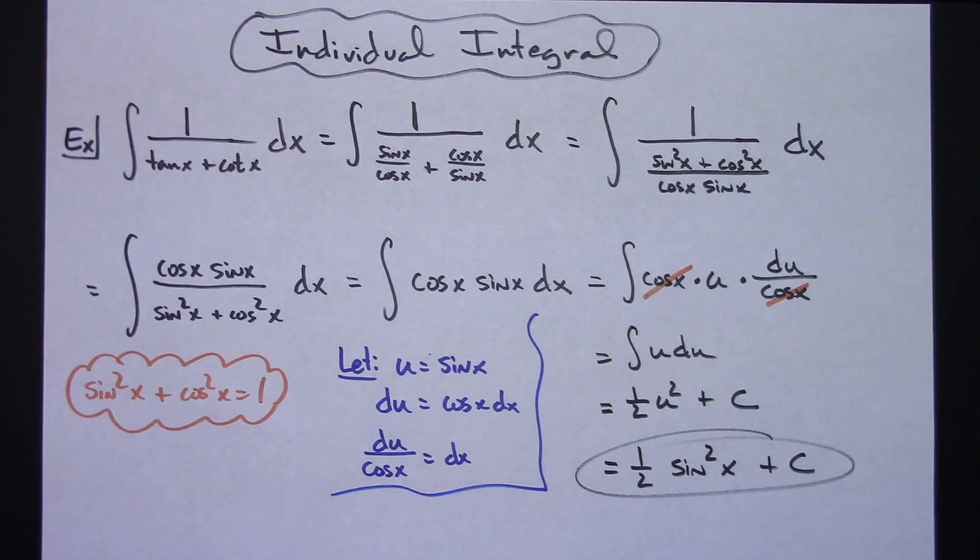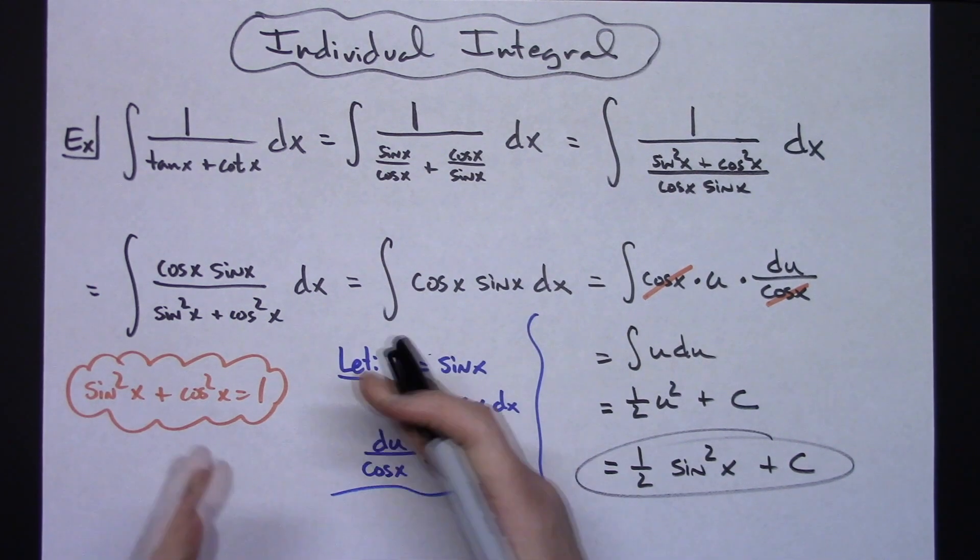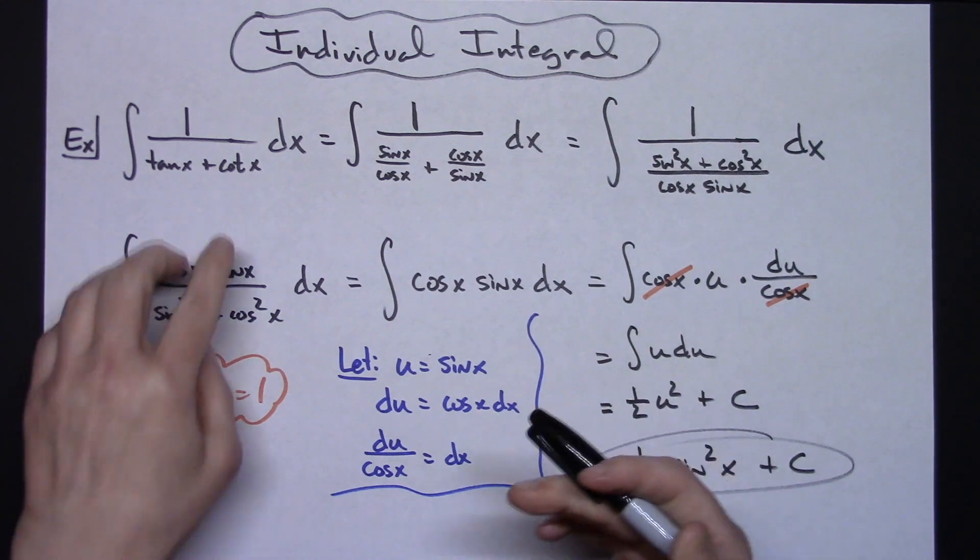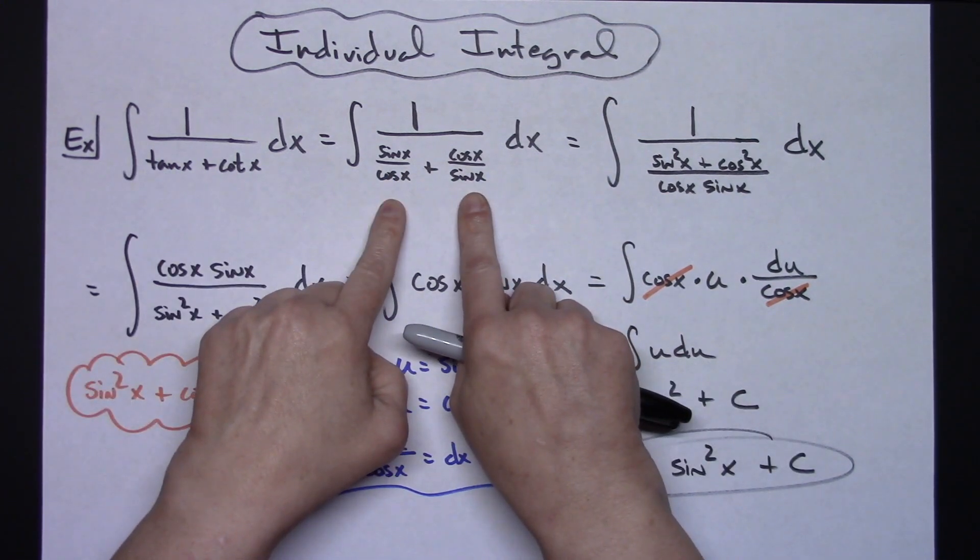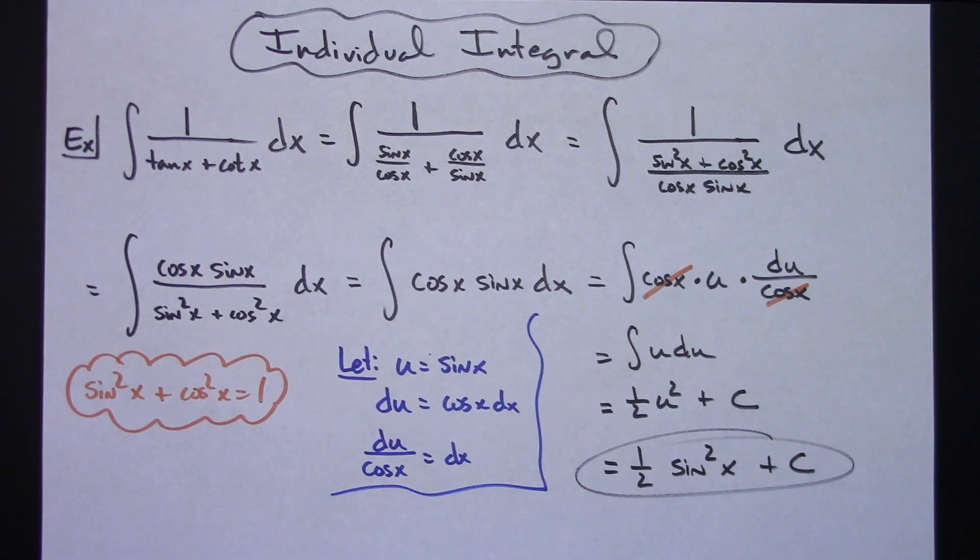Alright as with almost any trig integral you're going to have to do lots of different substitutions and on this one that tangent cotangent works really really nice if you go to these quotient identities of sine over cosine, cosine over sine.